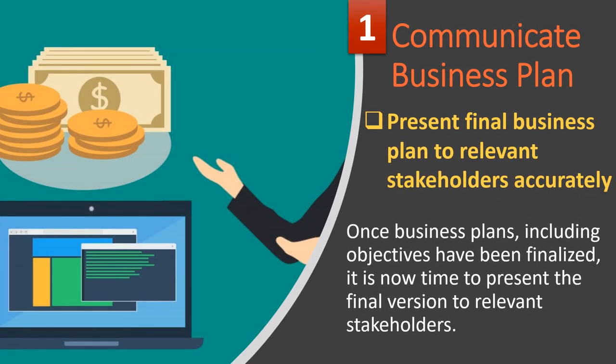First, communicate the business plan. Present the final business plan to relevant stakeholders accurately. Once business plans including objectives have been finalized, it is now time to present the final version to relevant stakeholders.